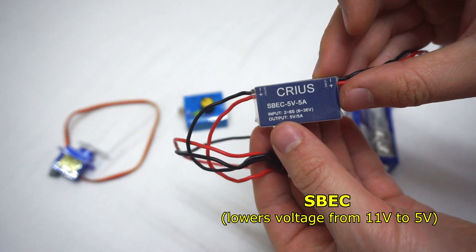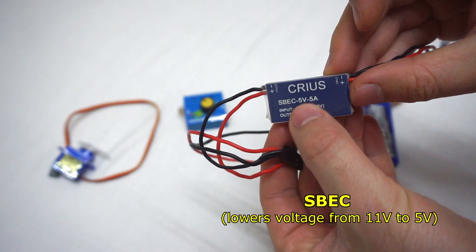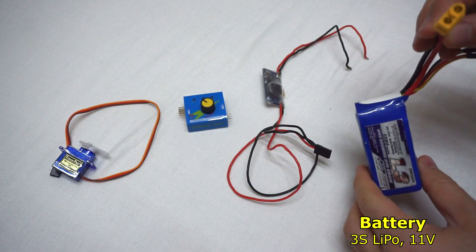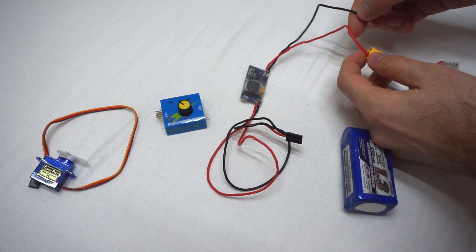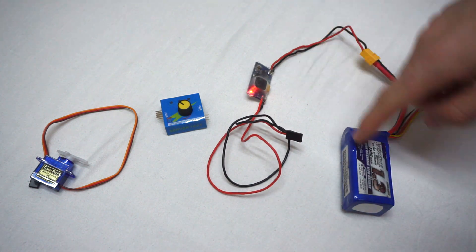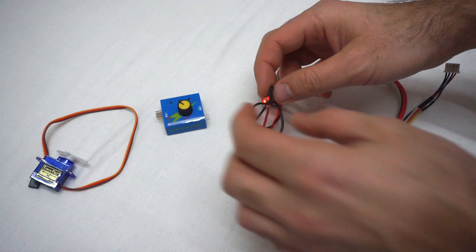I need this SBEC to reduce my battery's voltage to 5 volts DC, and that's the battery itself. It's a three-cell battery. So let's connect the power. The 11 volts are reduced to 5 volts DC.